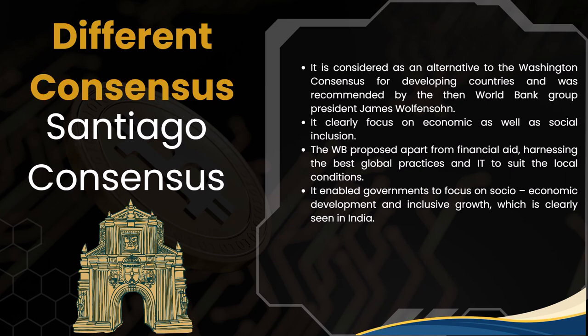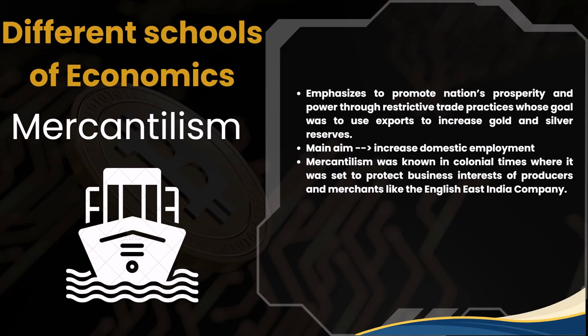Now let's look at the different schools of economics. Mercantilism emphasizes promoting a nation's prosperity and power through restrictive trade practices; the goal was to use exports to increase gold and silver, with the main aim of increasing domestic employment. It was seen during the colonial phase, where it protected the business interests of producers and merchants — for example, import tariffs to the UK were very high but tariffs on goods exported to India were very low. This is how mercantilism worked.